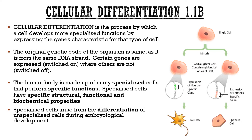Cellular differentiation is the process by which a cell develops more specialized functions by expressing certain genes — turning them on or off. Imagine each one of your cells has hundreds of thousands of different light switches, and whatever combination of switches is on makes a different result. The original genetic code in each of these cells is the same, but a different set of genes is expressed.